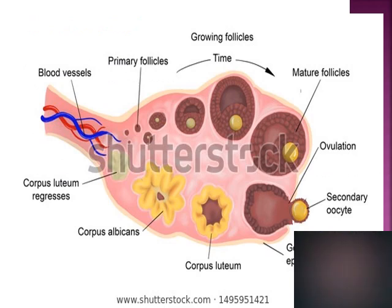Looking at the diagram of the ovarian cycle, on the left-hand side we can see primary follicles. As the follicle grows, there is a fluid-filled space inside called the antrum. In the mature follicle, the oocyte is pushed to one side, surrounded by the cumulus oophorus, which is three layers of granulosa cells. At ovulation, the secondary oocyte comes out along with the cumulus oophorus. The yellowish structure remaining in the ovary is the corpus luteum, and if there is no fertilization, it becomes whitish and is called the corpus albicans.